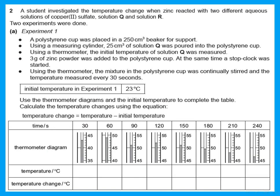The second question says a student investigated the temperature change when zinc reacted with two different aqueous solutions of copper sulfate — Q and R. In the first experiment he put a polystyrene cup into a beaker for support, used a measuring cylinder to add 25 cm³ of solution Q into the polystyrene cup, measured the initial temperature, added three grams of zinc powder, started a stop clock, and measured the temperature every 30 seconds. The initial temperature was 23°C.